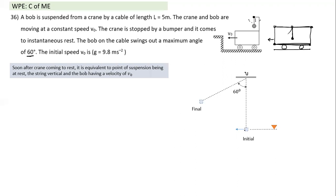When the support stops, it is equivalent to the bob having velocity v₀ with a fixed pivot. The bob then swings in an arc due to inertia, rising until it reaches momentary rest at 60°. Tension in the string always acts perpendicular to motion, so only gravity does work — we can apply conservation of mechanical energy.